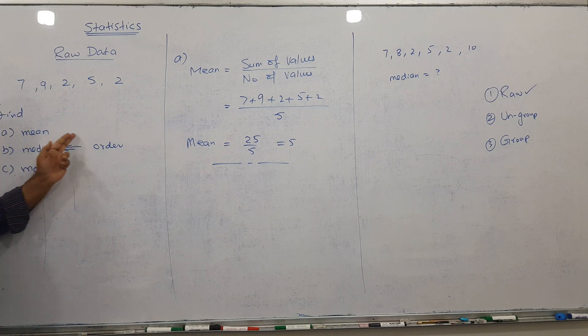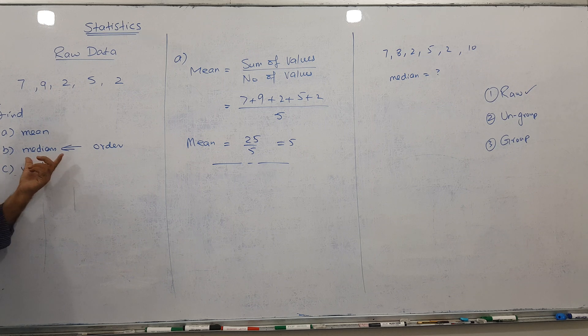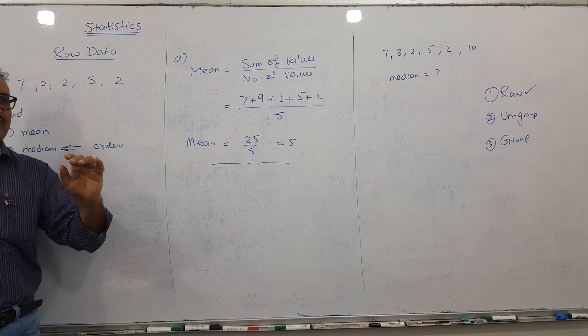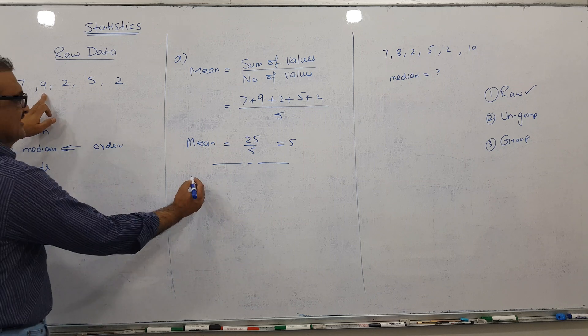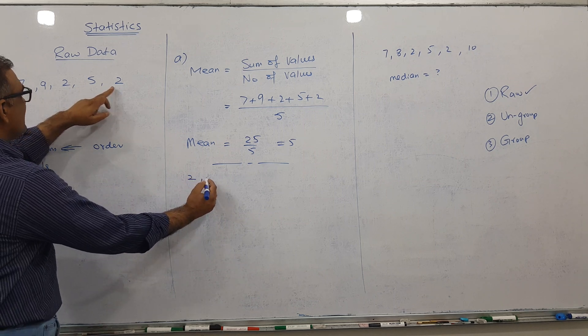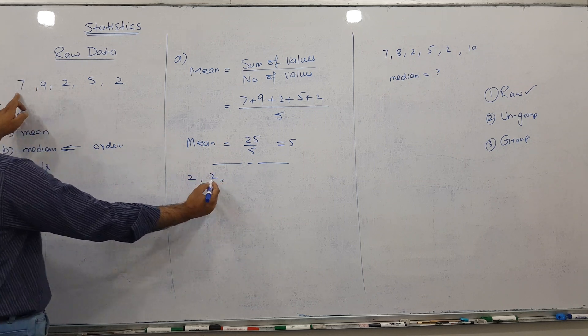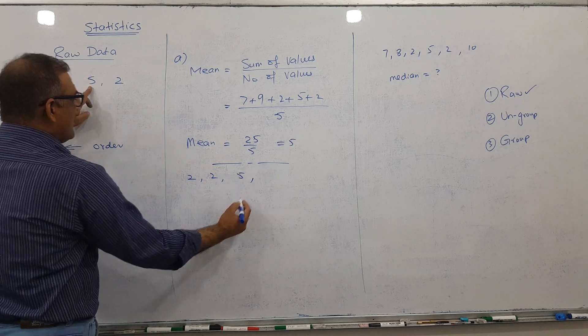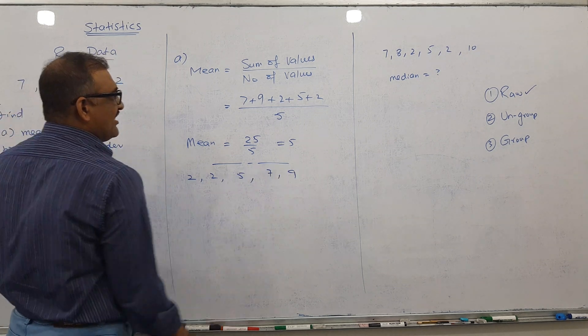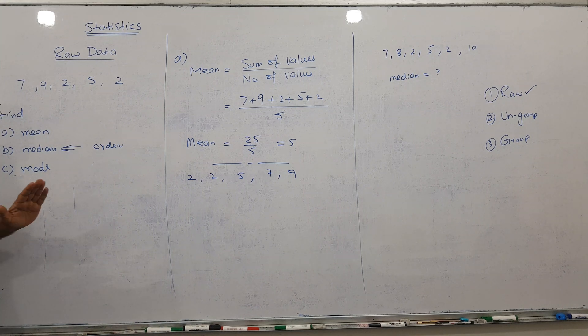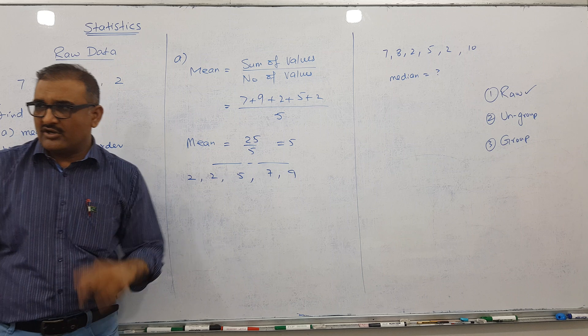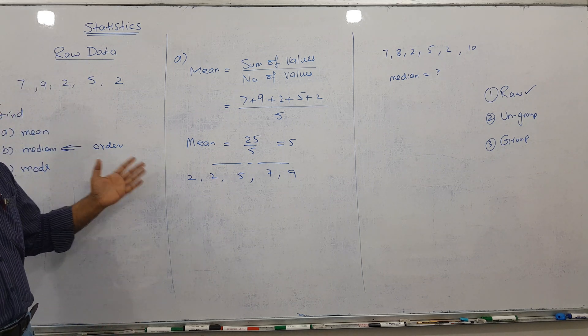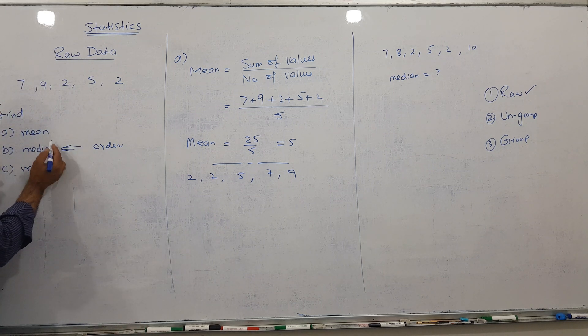Mean is very clear. Let's talk about median. Median is the only thing when we need order. So I write in order: first 2, then 2, then 5, after 5 I have 7, then 9. Ascending order or descending order, no issue.